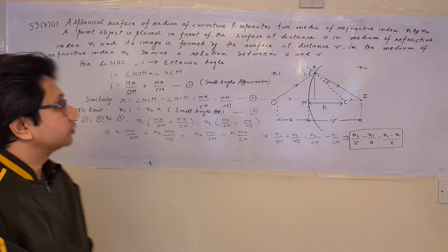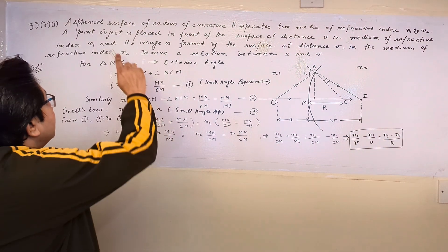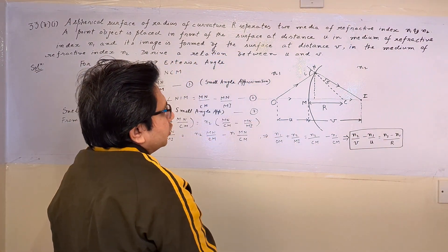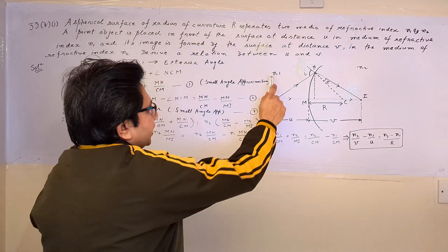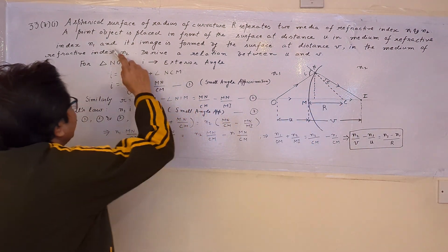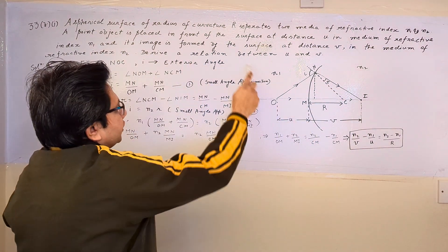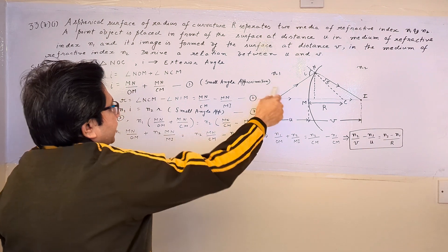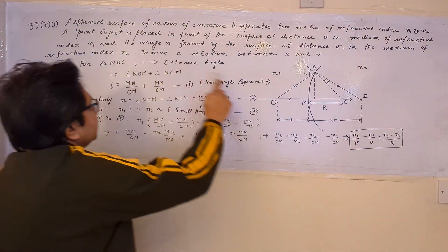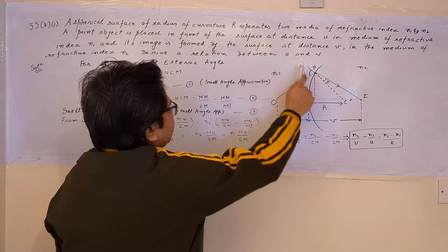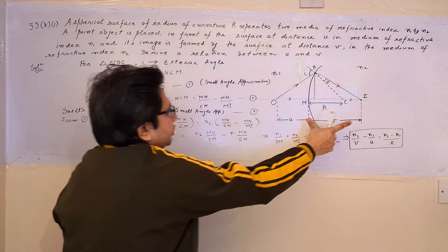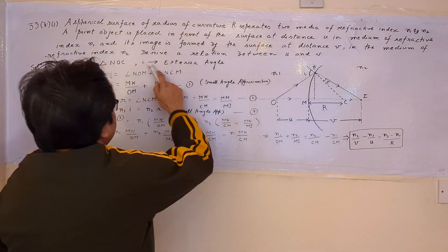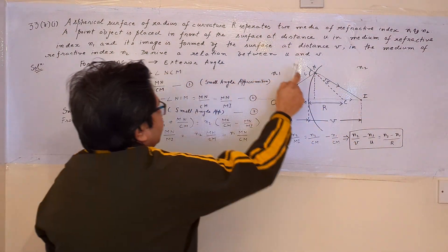Hello students. The question is: a spherical surface of radius of curvature R separates two media of refractive index n1 and n2. A point object is placed in front of the surface at a distance u in the medium of refractive index n1, and its image is formed by the surface at a distance v in the medium of refractive index n2. Derive a relationship between u and v.